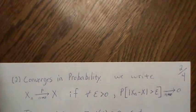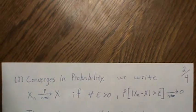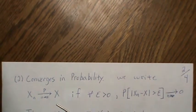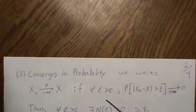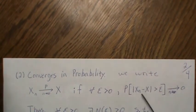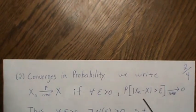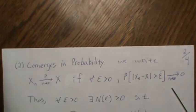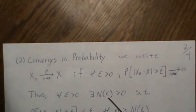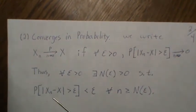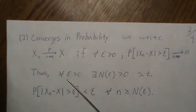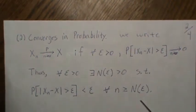The second type is convergence in probability. We write X_n →ᵖ X. This holds if, for every ε > 0, P(|X_n - X| > ε) → 0 as n → ∞. Formally, for every ε > 0, there exists an N, which can be a function of ε, such that P(|X_n - X| > ε) < ε for all n greater than N.